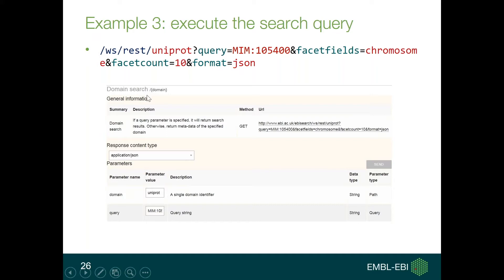This is the familiar Swagger page where we can fill all the required information. You can see the resulting method with the query parameters, the facet fields set to chromosome, the facet count set to 10, and the format set to JSON.